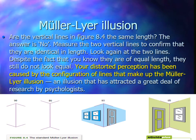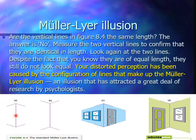One of the most famous illusions in psychology is the Muller-Lyer illusion. Looking at figure 8.4, line A looks a lot shorter than line B — it looks smaller. However, they're actually the same length. Despite being told they're of equal length, they don't look equal. Your distorted perception is caused by the configuration of lines that make up the Muller-Lyer illusion, which has attracted a great deal of research by psychologists. The Muller-Lyer illusion is a visual illusion in which one of two lines of equal length, each with opposite-shaped ends, is incorrectly perceived as being longer than the other.